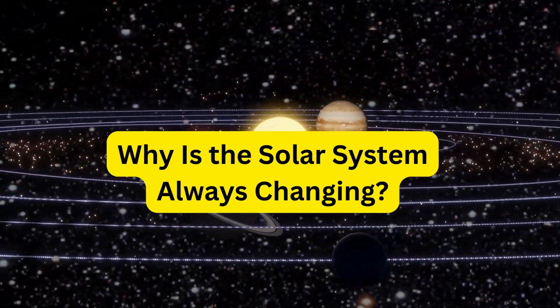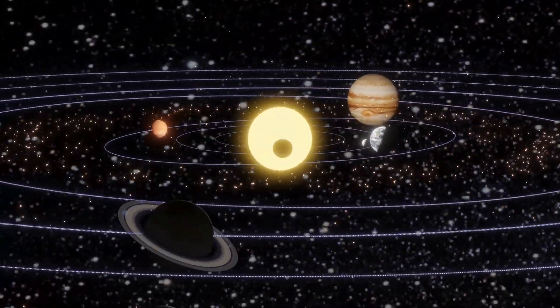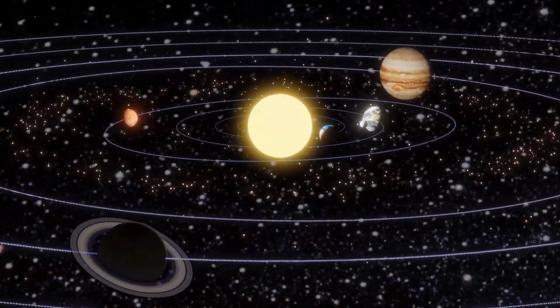Why is the solar system always changing? The solar system is always changing because it's always moving.